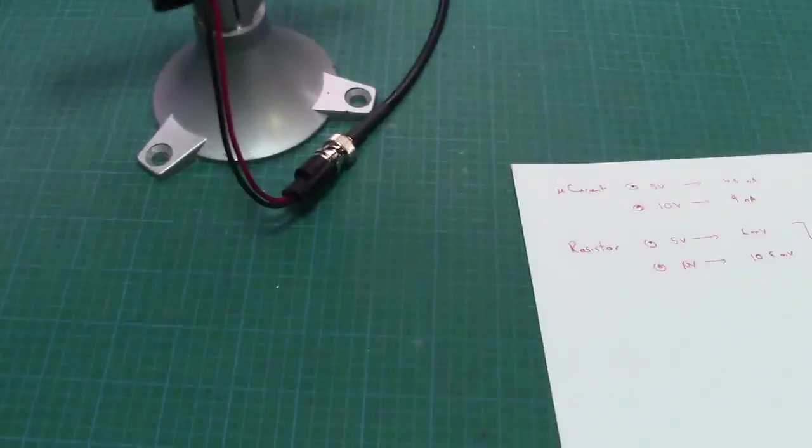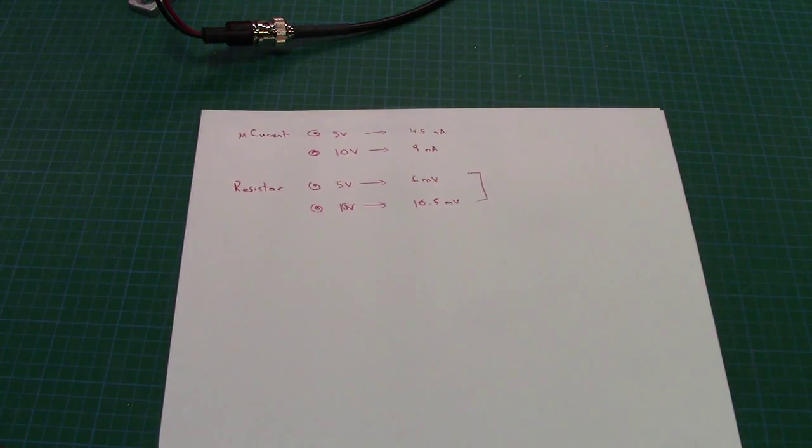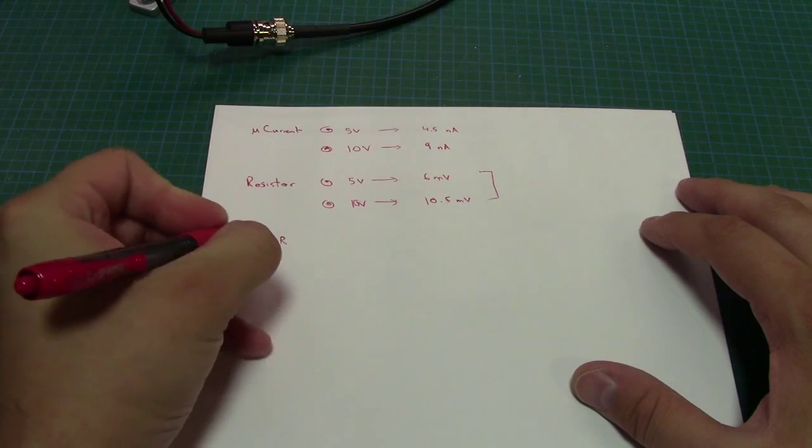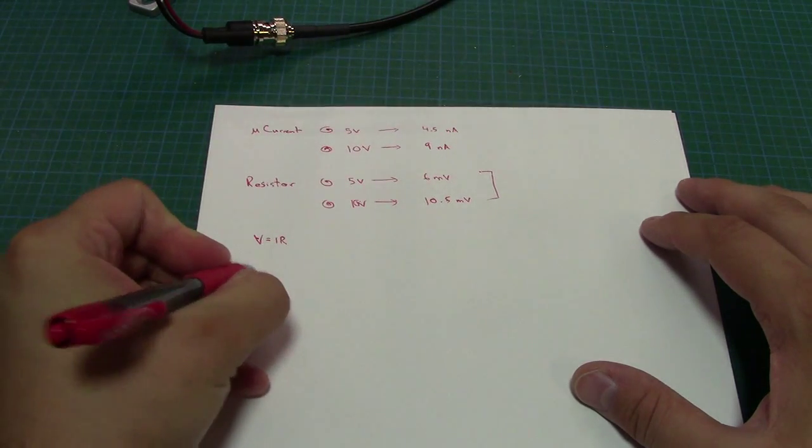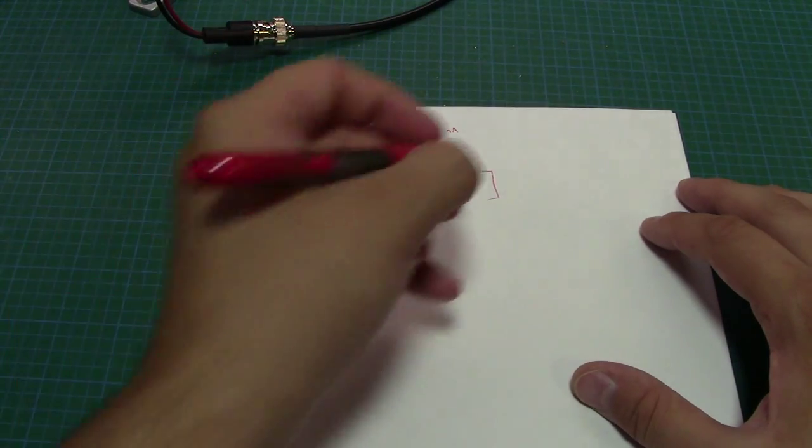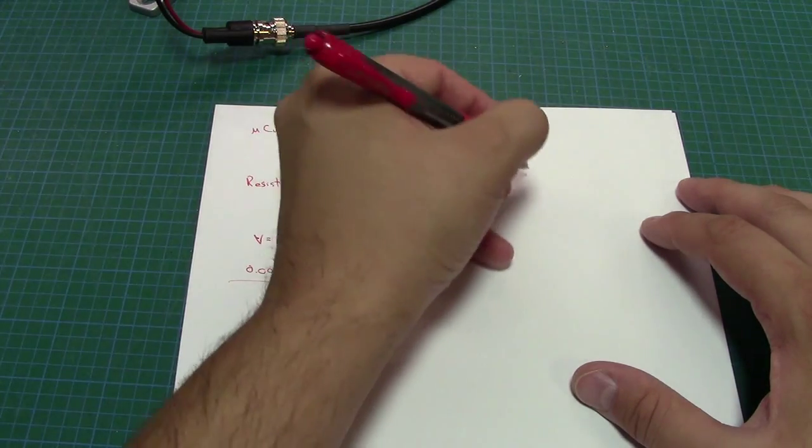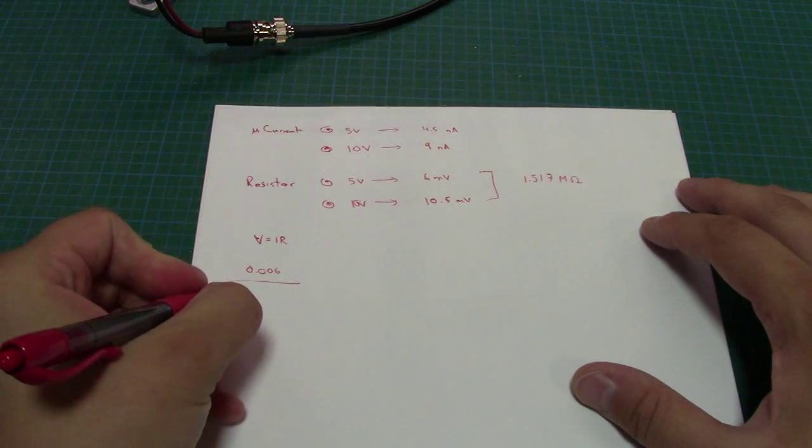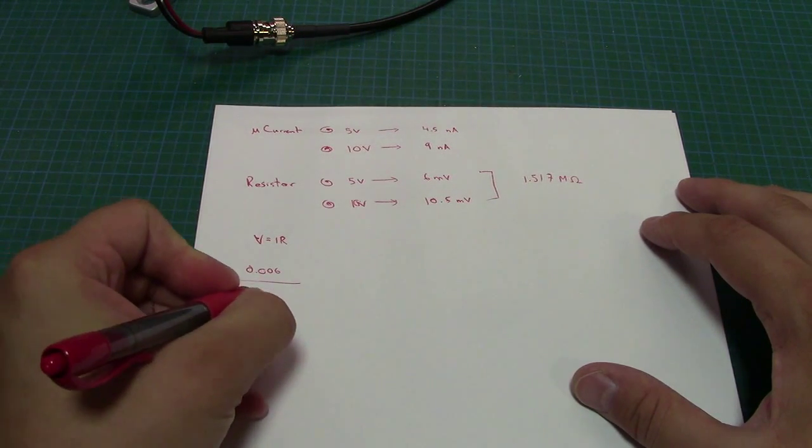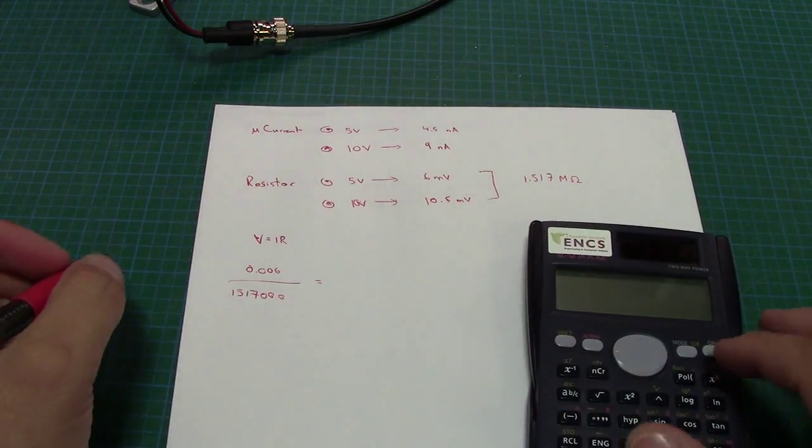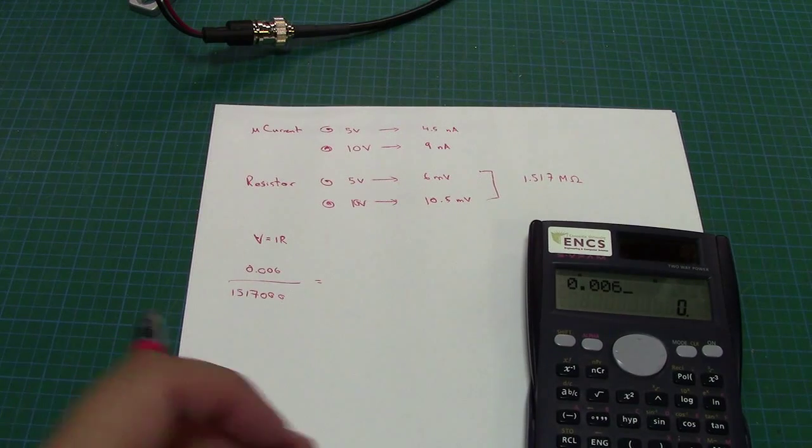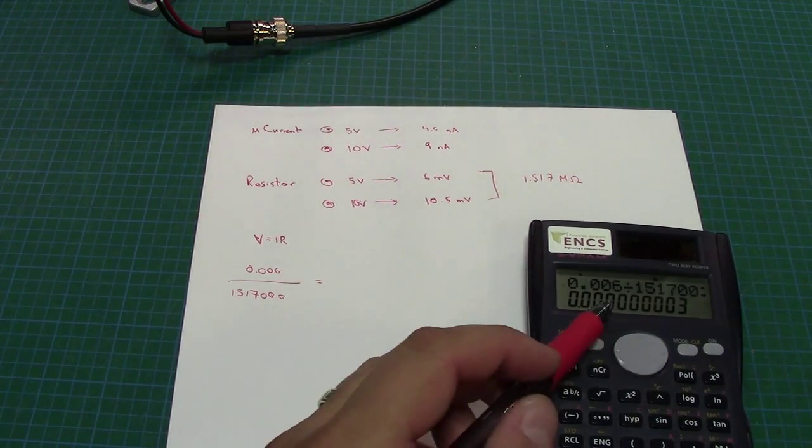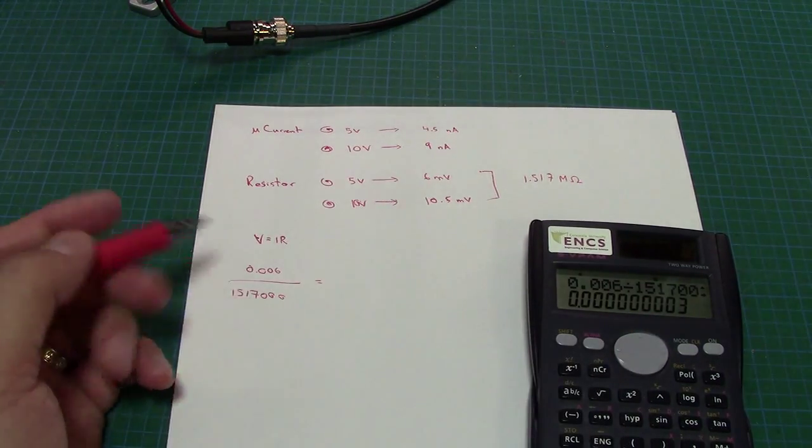Now these of course aren't the final measurements. We've got to do a little Ohm's law here. So let's go jump down here really quickly. So of course V equals IR. In this case the measured voltage is 6 millivolts. I'm going to divide that by the resistance. Now the resistance for this particular resistor was 1.517 megaohm. So we'll divide this by 1,517,000. And a couple of quick maths, and we get roughly 3 nanoamps.